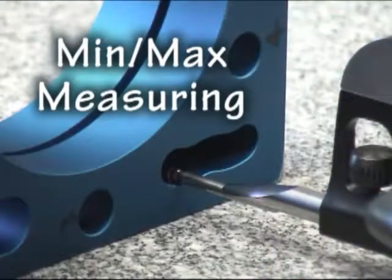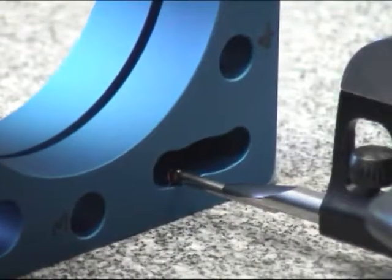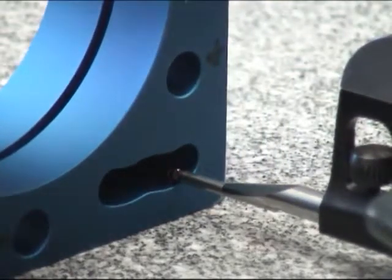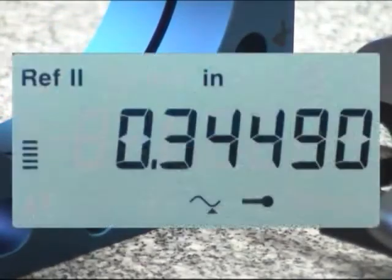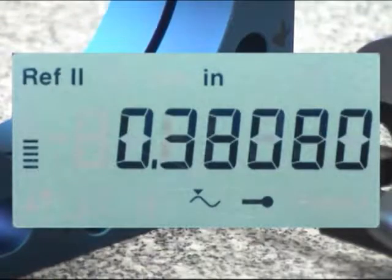To measure min-max on the Altea, we're first to press the min-max button. Then sweep over our object. By using the min-max button, we can then cycle between min, max, and delta modes.